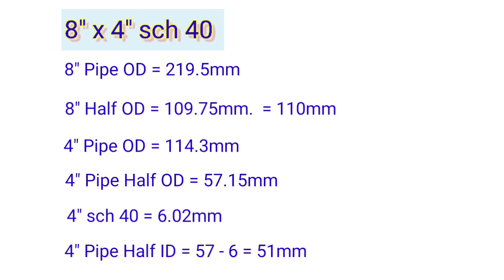So 8 inch half OD equals 109.75mm, rounded to 110mm. Another one: branch 4 inch OD equals 114.3mm.